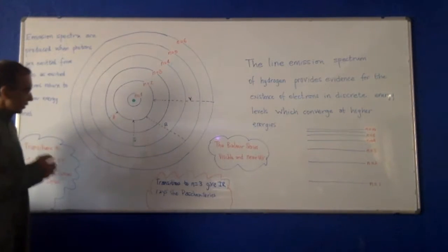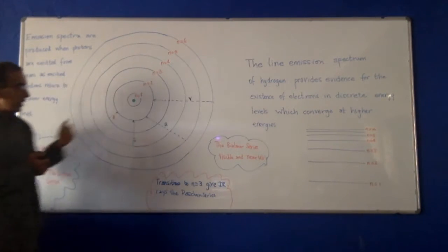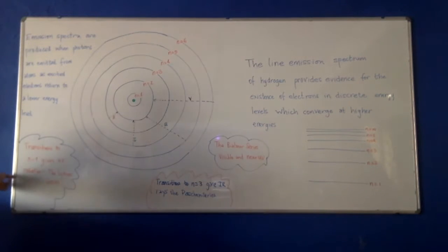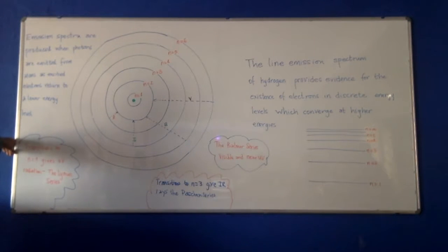Then suppose the transitions are from higher levels down to the n equals one level. Then we get lines, yes, photons are emitted, but these cannot be seen by our eyes. So we will need some other thing to detect this photon that's emitted, and this radiation is usually in the UV part of the spectrum.